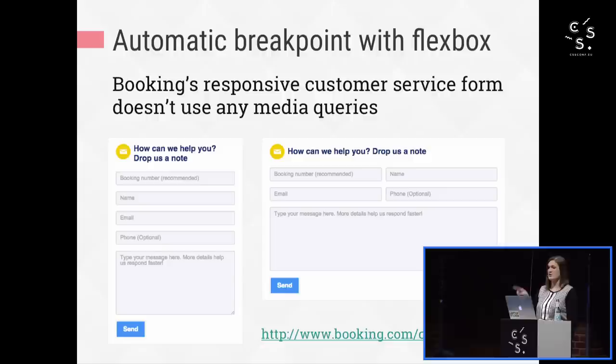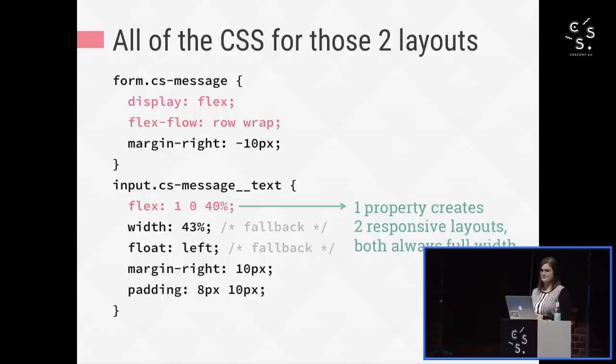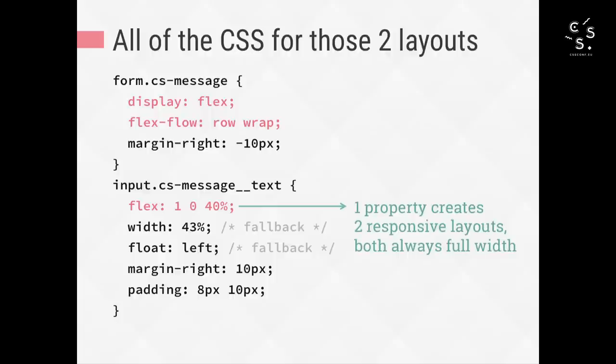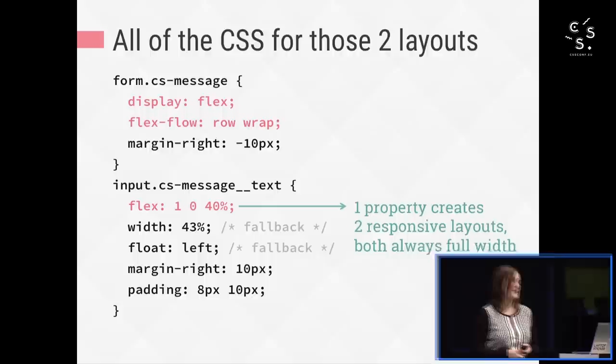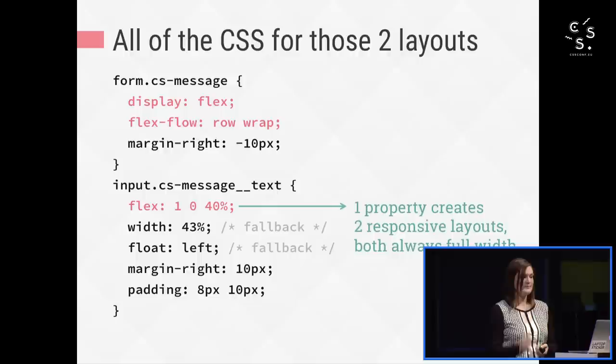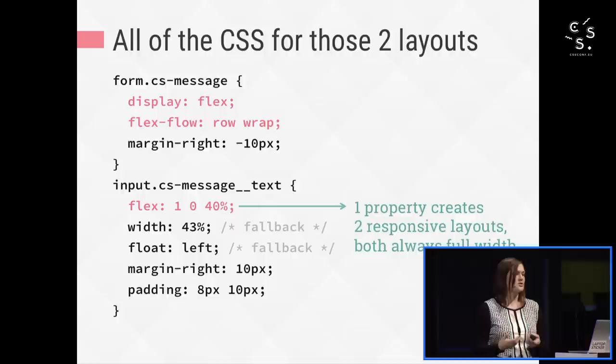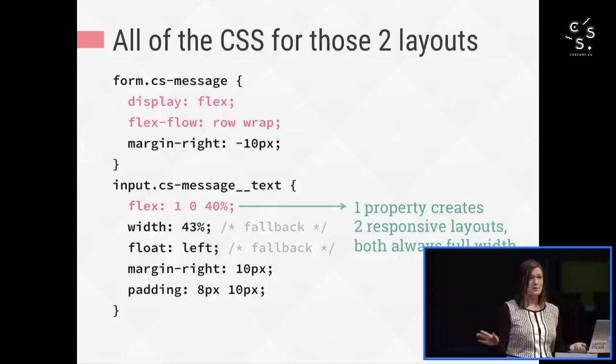The fields switch from stacked to 2×2 automatically as soon as they can fit beside each other — and by automatically, I mean no media queries. This is all of the CSS that's needed to create those two layouts. There's no media queries because the browser figures out the breakpoint for you using Flexbox. The flex property is simply an enhancement on top of the floating and the percentage width that control the layout of the form when Flexbox isn't available. The non-Flexbox version seen in IE 7 through 9 has the same two layouts — they just don't stretch to be full width. But I think that small difference is an acceptable tradeoff for being able to write just a few lines of CSS, no media queries, and being completely done with laying out an entire responsive form.